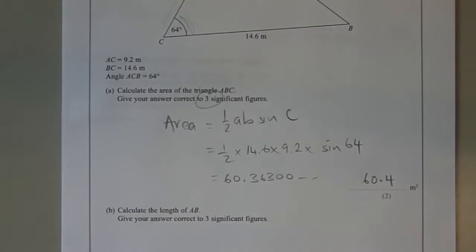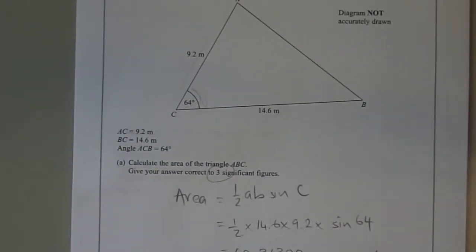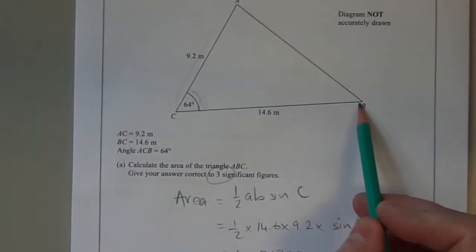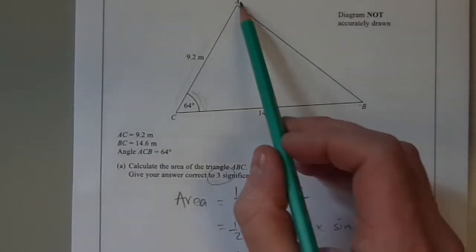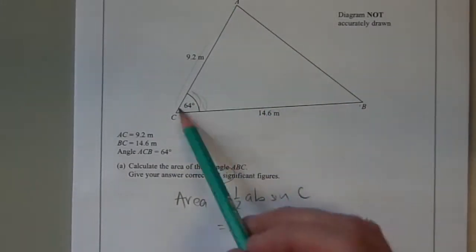Part B: calculate the length of the line AB. This is a cosine rule question. We need to find this length when we know two other sides and an angle.